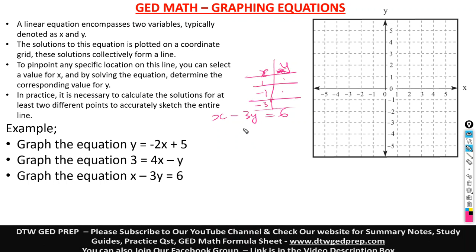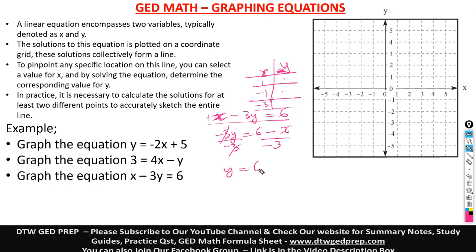Now we have to make Y stand alone — I'm going to divide both sides by negative 3. So we have Y equal to (6 minus X) over negative 3. With this, I will put in my values for X. Let's start with X equal to zero. So Y equals (6 minus 0) over negative 3. That leaves us with 6 over negative 3, which gives us negative 2.